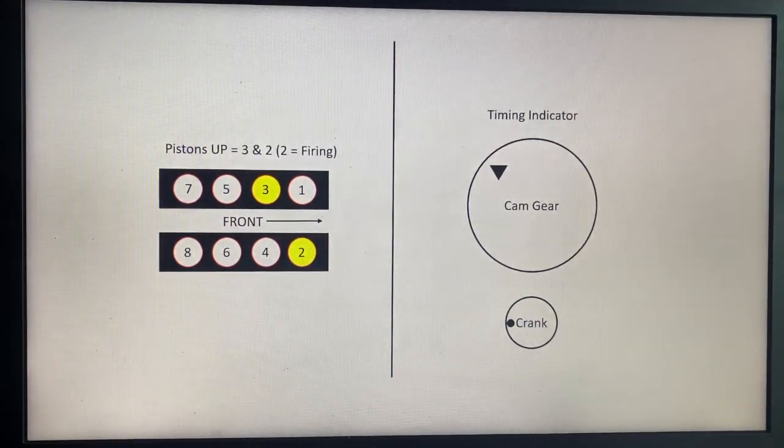If you then rotate another 90 degrees clockwise on the crank, your crank timing gear will be at the nine o'clock position, which will leave pistons number three and two up. This allows you to change the valve springs on those two cylinders, which will complete the valve spring change.